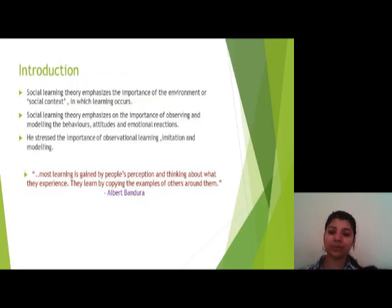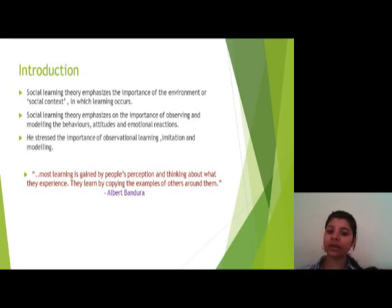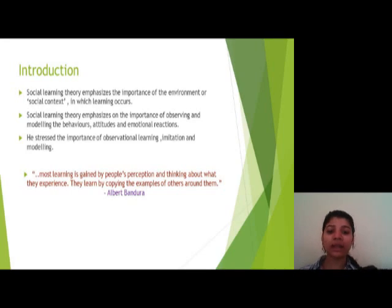Social learning theory is a theory of learning and social behavior which proposes that new behaviors can be acquired by observing and imitating others. It states that learning is a cognitive process that takes place in a social context and can occur purely through observation or direct instruction, even in the absence of motor reproduction or direct reinforcement. In addition to the observation of behavior, learning also occurs through the observation of rewards and punishments, a process known as vicarious reinforcement.